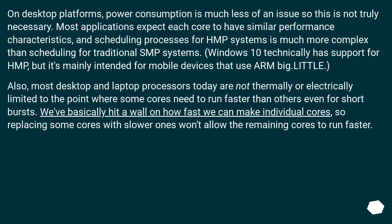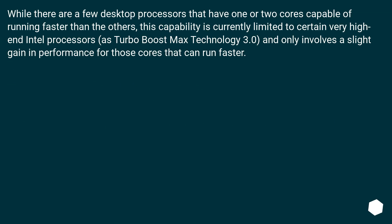Also, most desktop and laptop processors today are not thermally or electrically limited to the point where some cores need to run faster than others even for short bursts. We've basically hit a wall on how fast we can make individual cores, so replacing some cores with slower ones won't allow the remaining cores to run faster. While there are a few desktop processors that have one or two cores capable of running faster than the others, this capability is currently limited to certain very high-end Intel processors as Turbo Boost Max Technology 3.0, and only involves a slight gain in performance for those cores that can run faster.